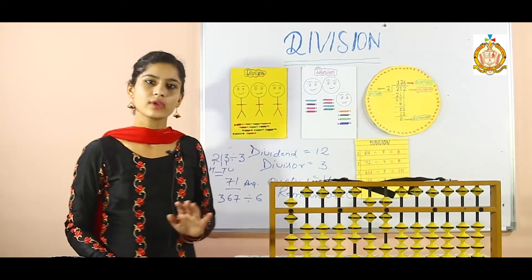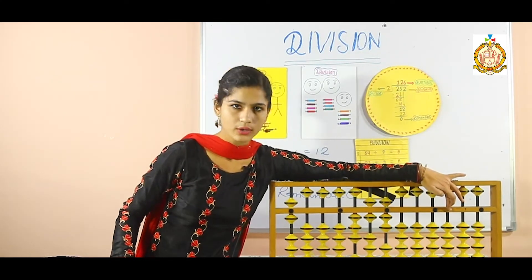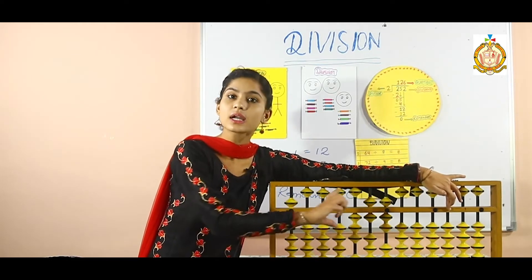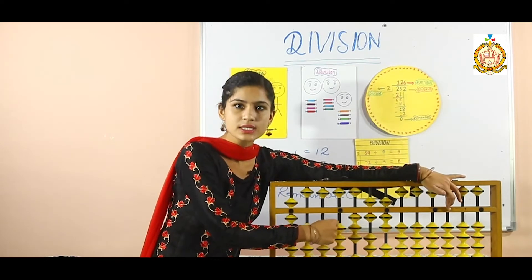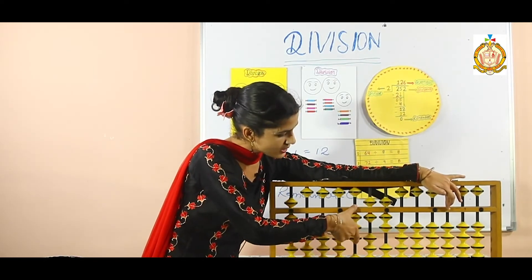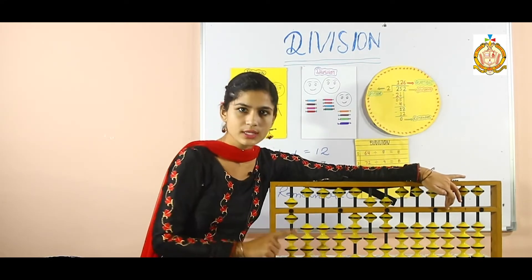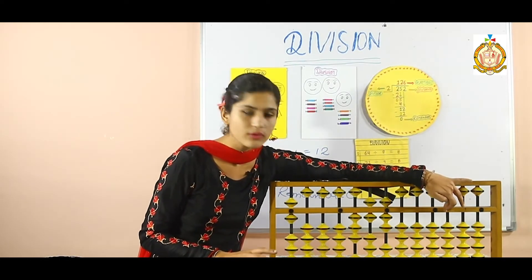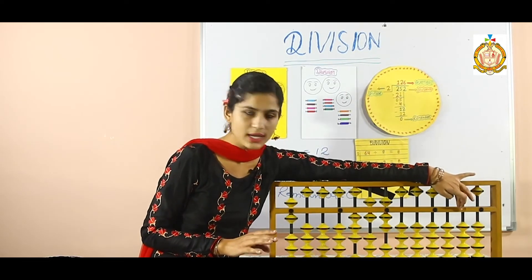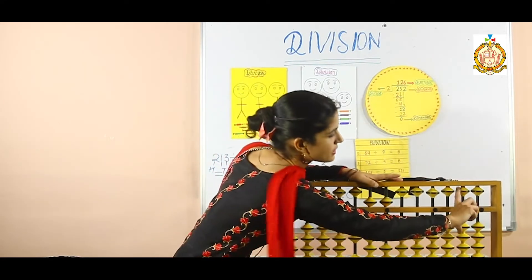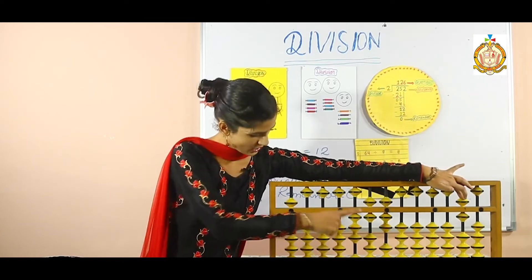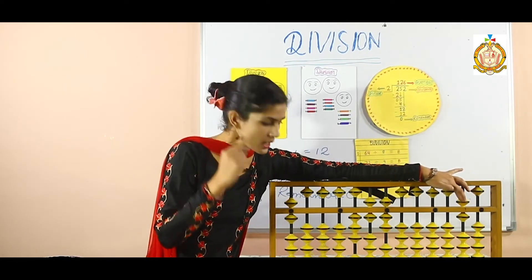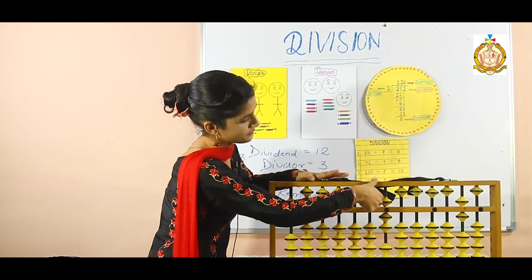Dividend has 3 digits, so the answer will come in 3 digits. Place finger on the third rod. First digit of the dividend is 3, but divisor is 6 — divisor is greater. So take the next digit: next is 6, together making 36. 36 divided by 6 is 6. 6 is a single-digit number; keep 0 in front. On the third rod, place 0 (no bead). Move to the next rod and add 6 — 6 is a butterfly number. Multiply quotient by divisor: 6 into 6 is 36. Deduct 36 from the dividend. Remaining is only 7.